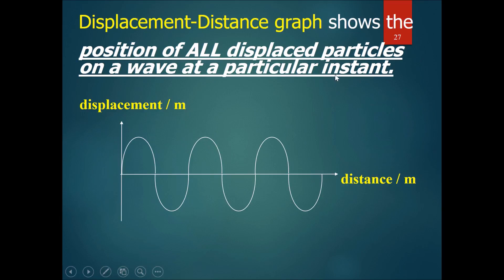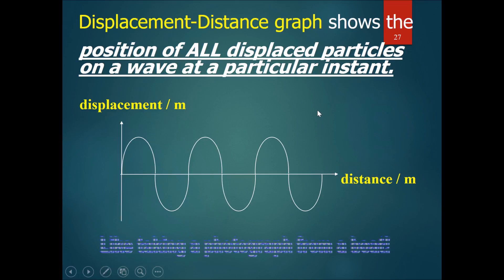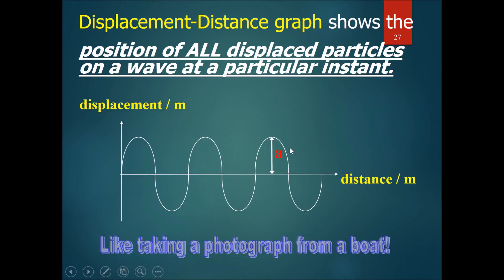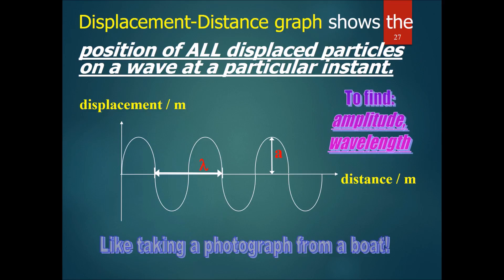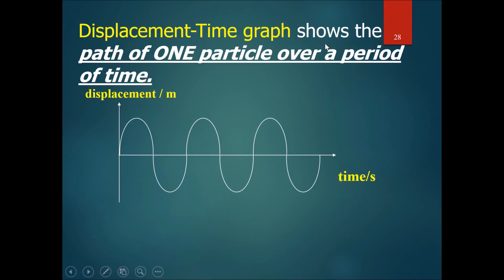The displacement-distance graph shows the position of all displaced particles on a wave at a particular instant — it's like taking a photograph from a boat. You get the amplitude and wavelength from it. The displacement-time graph, however, shows the path of one particle over a period of time. From it you can find the amplitude, but that horizontal length represents the period, not the wavelength.